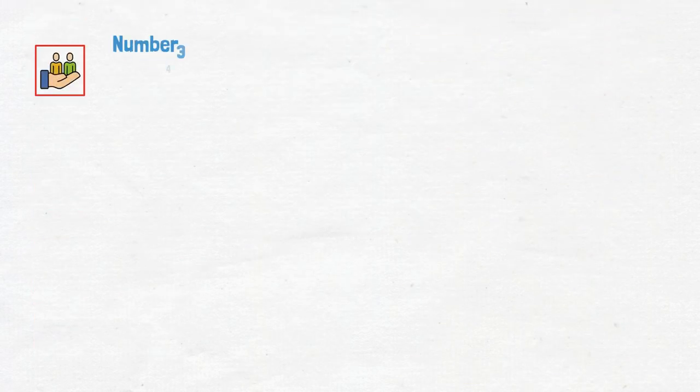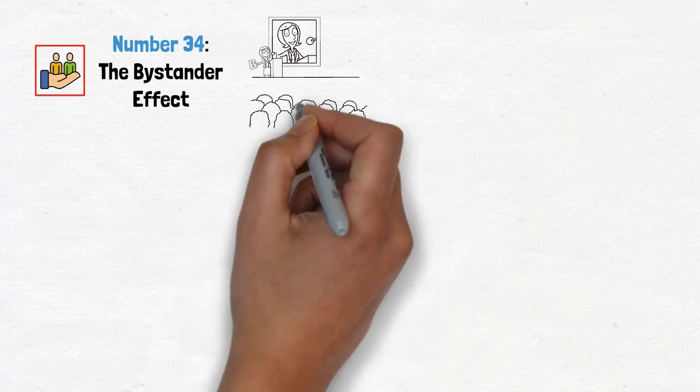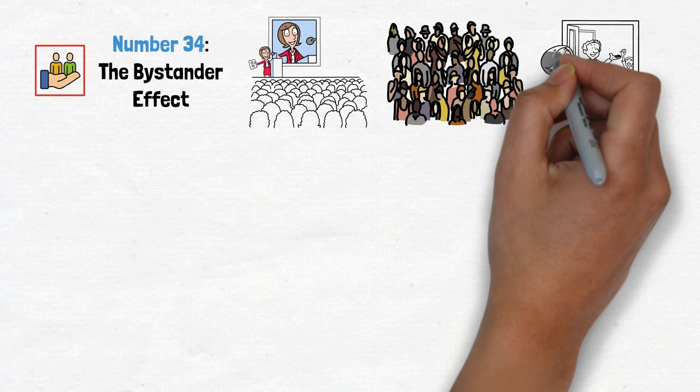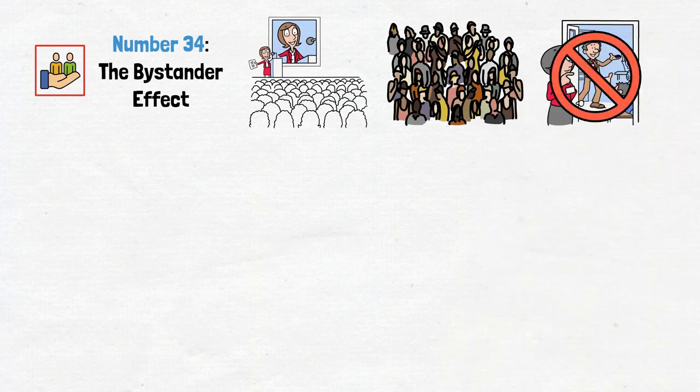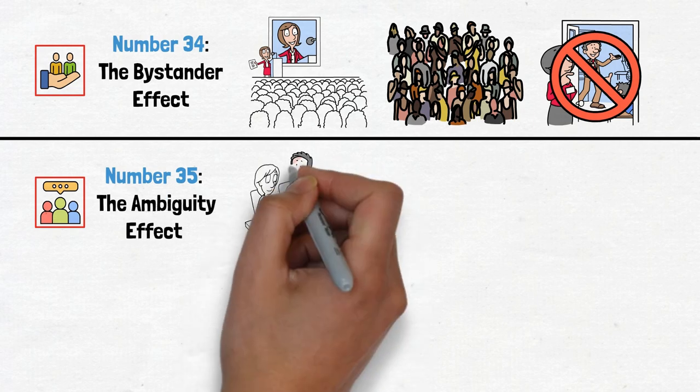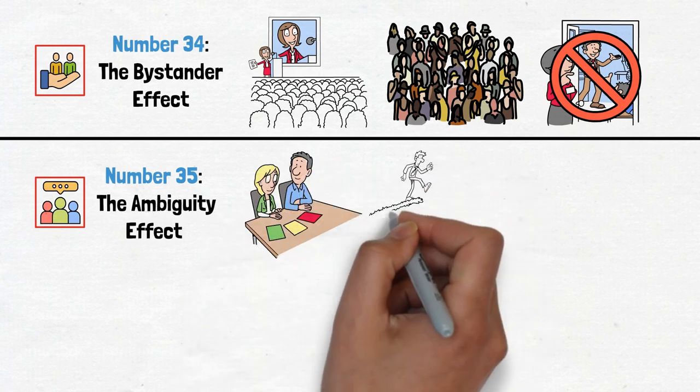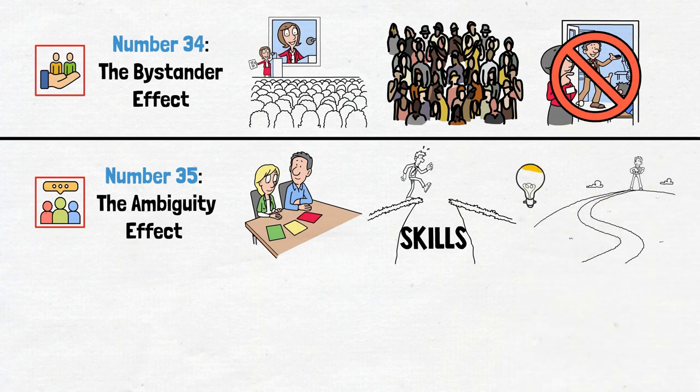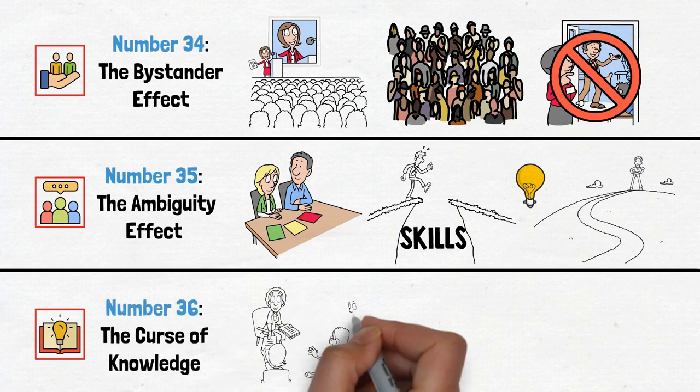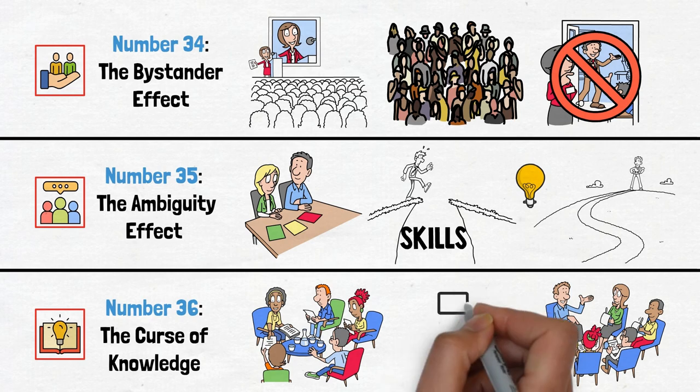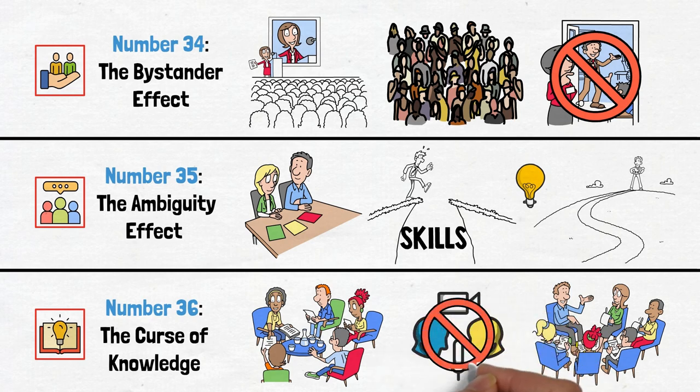Number 34, the bystander effect. Take the lead and be the change you want to see in the world. Instead of waiting for other people to act, set a good example. Number 35, the ambiguity effect. Embrace uncertainty and take calculated risks. Sometimes the greatest rewards come from stepping into the unknown. Number 36, the curse of knowledge. Communicate clearly and consider your audience's perspective. Don't let the curse of knowledge hinder effective communication.